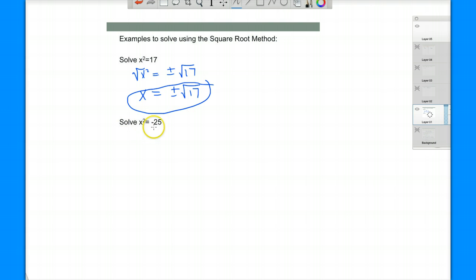Let's do this one. We couldn't do this by factoring because if we move the 25 over, we would have a sum of squares, which doesn't factor. But we can do it by taking the square roots of both sides. Square root of x squared is x, plus or minus. Remember, we take out an i when we have a square root of a negative number. So that's going to be plus or minus 5i. So we get two answers, positive 5i and negative 5i.